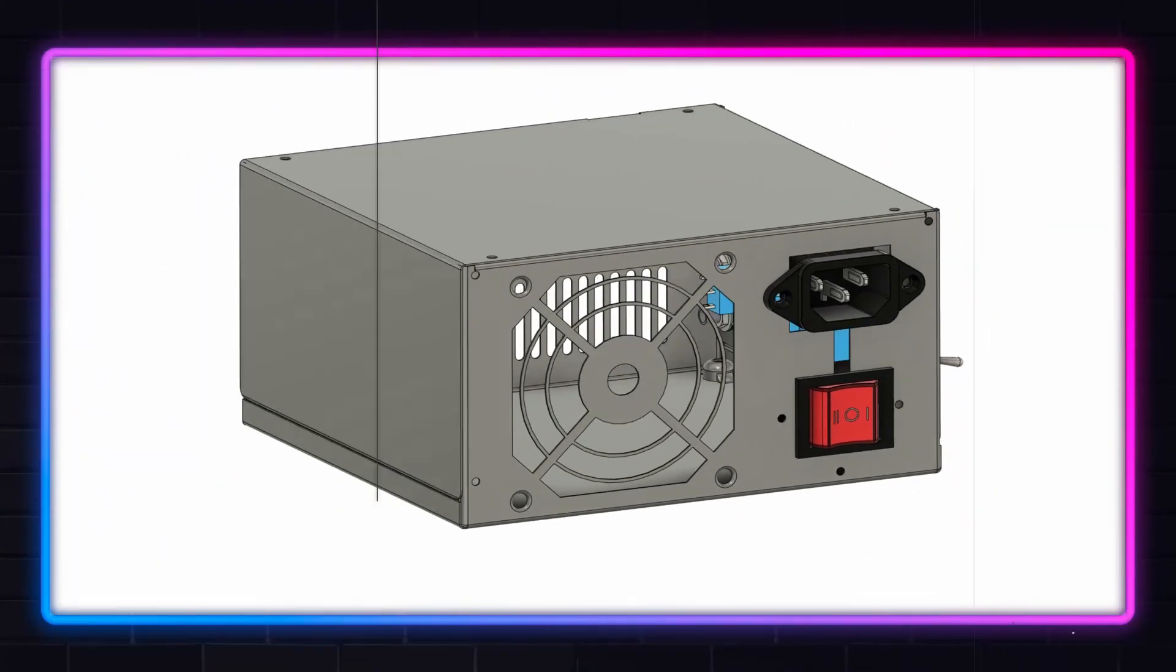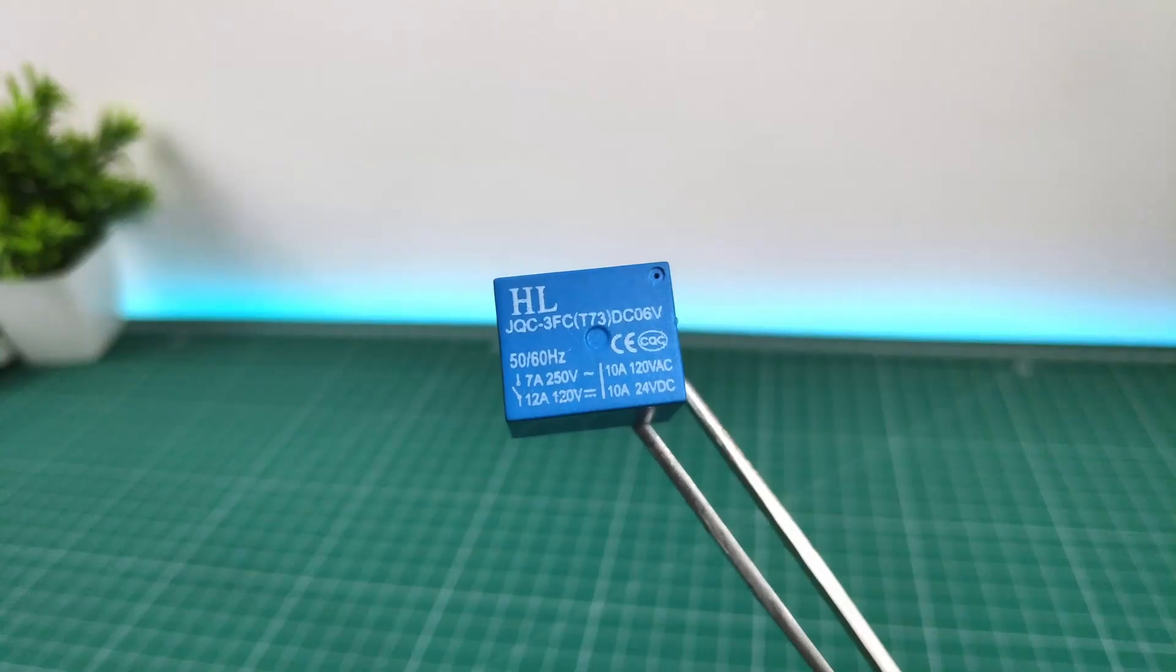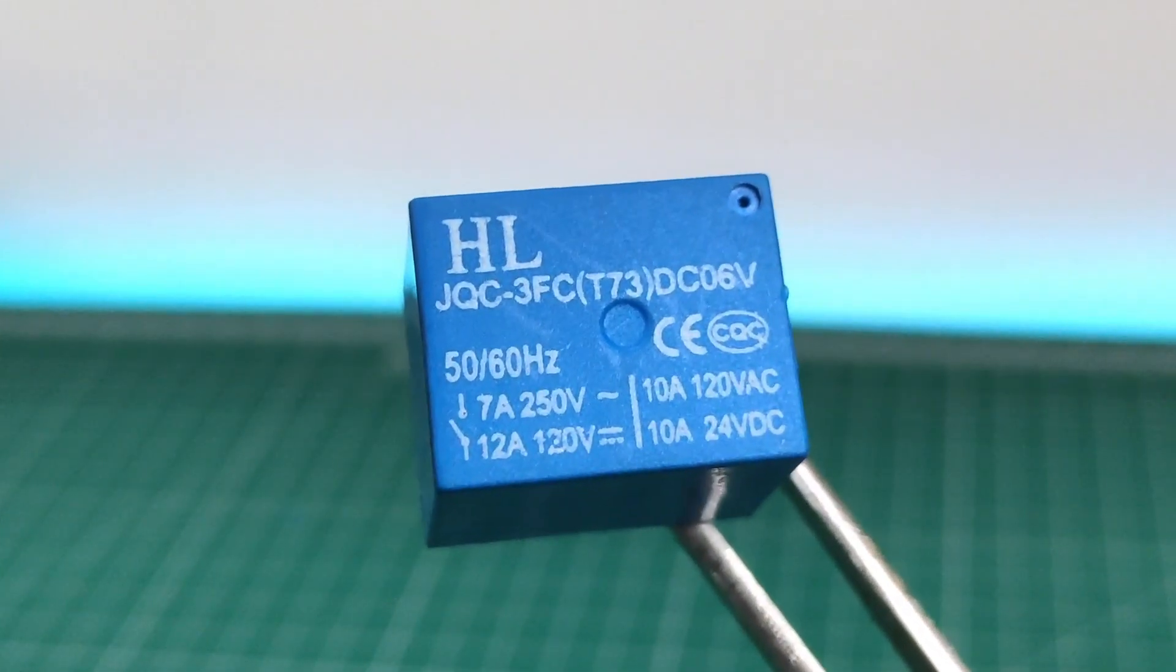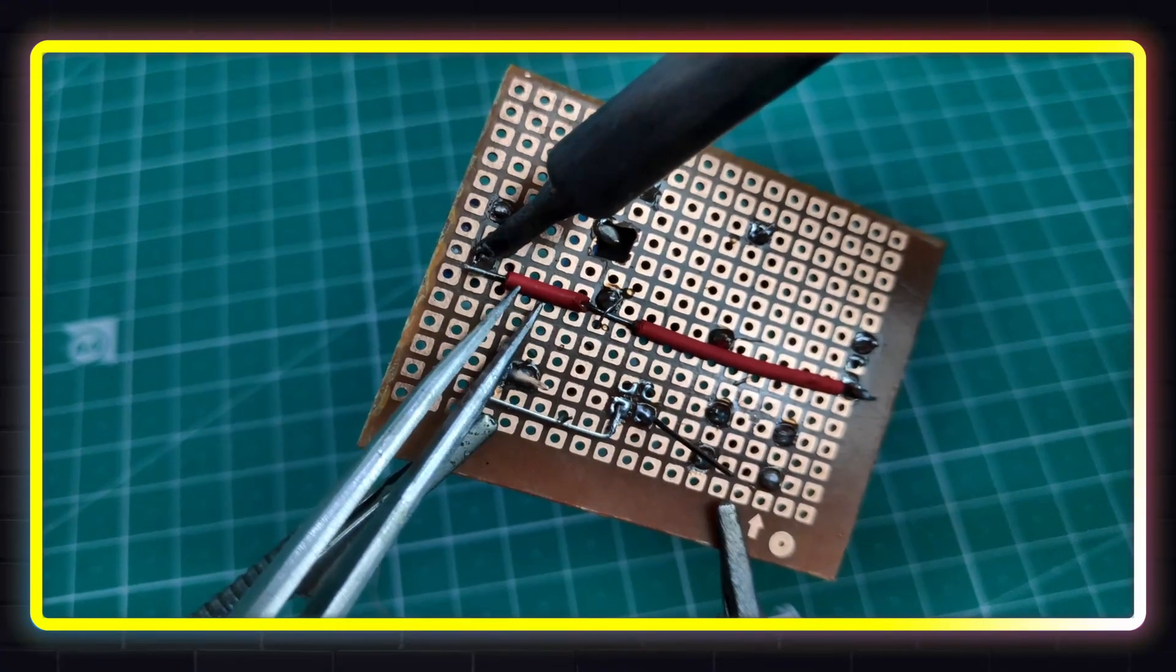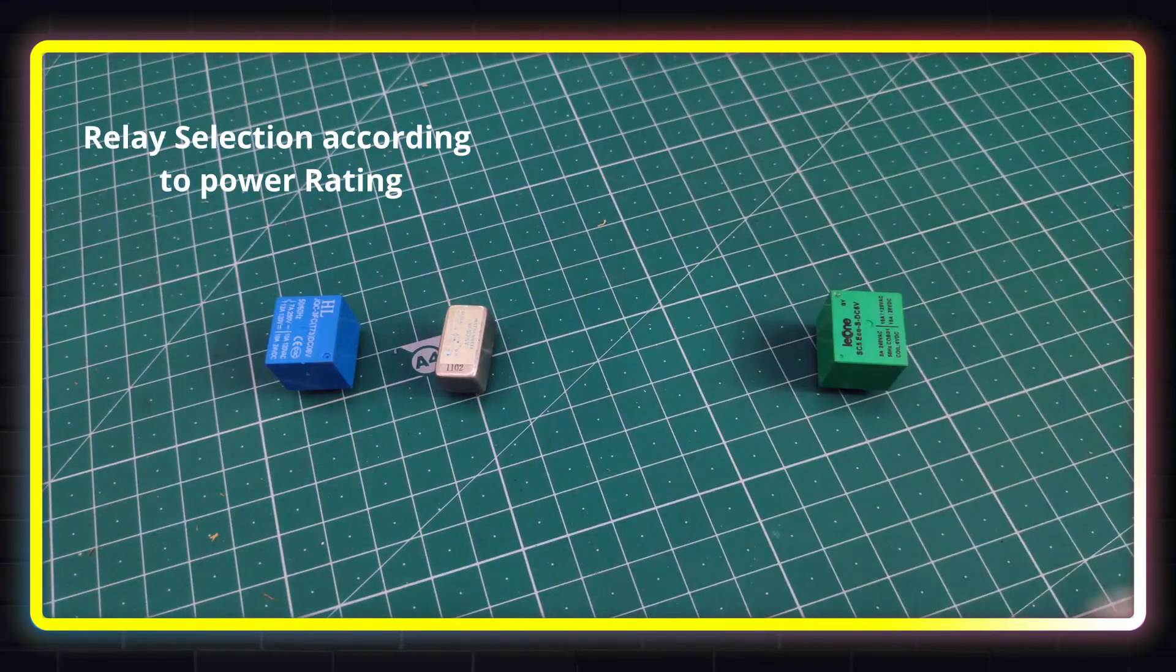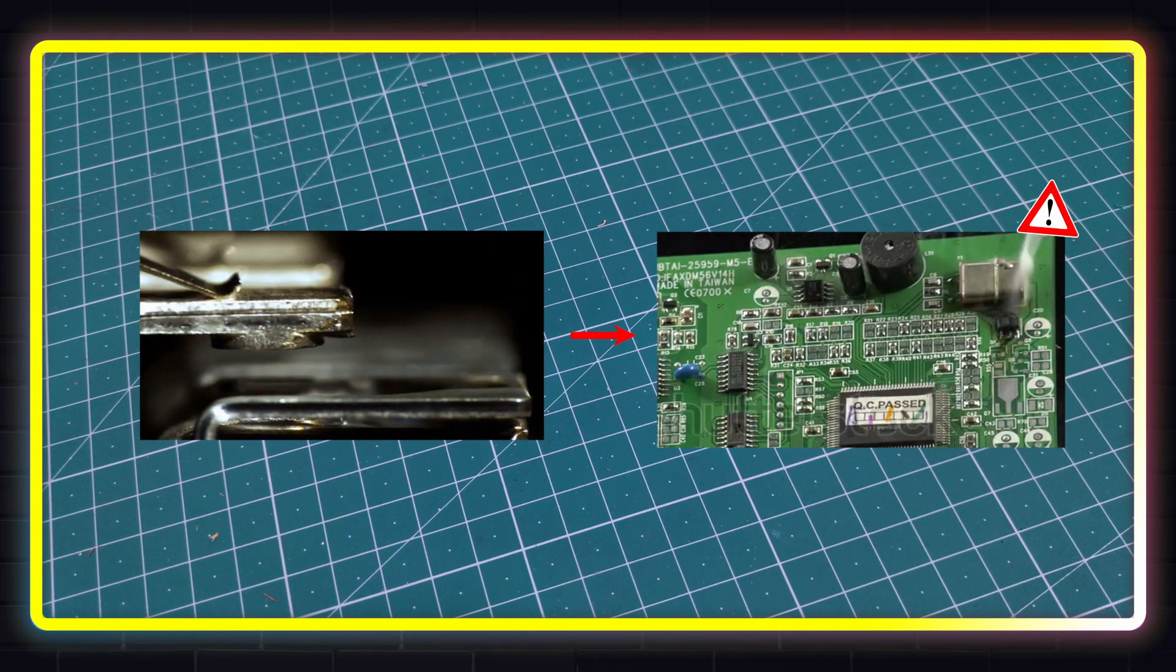The lab bench power supply that I am making will have a maximum output of 100W, which is 8.5A at 12V. So I chose this relay which can handle 10A at 24V and requires 6V to operate. If you are making this circuit, I recommend you select the relay properly according to the power rating, as overcurrent can weld the contacts of the relay causing the circuit to fail.